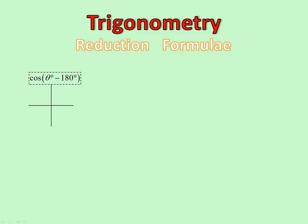Cos of theta minus 180. Now, these can be quite tricky, but not if you use the system. We are starting with the nudge — we go theta first, just a bit in. Now we go back 180 degrees. Which quadrant? Third quadrant. Positive or negative? Third quadrant for cos: negative. There we are, finished.